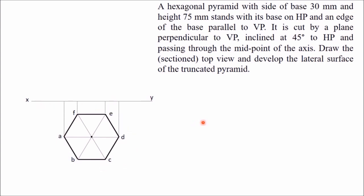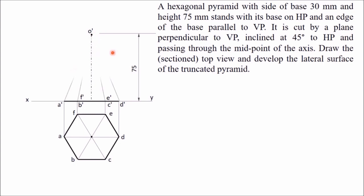The base is on HP, so project all base points onto the XY line. Points A, B, C, D are visible; E and F are not visible, so I have written A', B', C', D' at the bottom and E', F' at the top of this line. Project the apex — draw the axis through the apex with height 75 mm and mark the top point as O'.